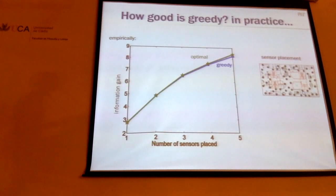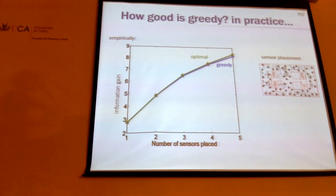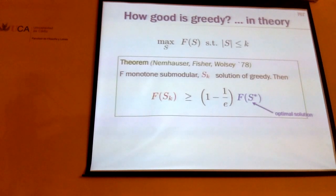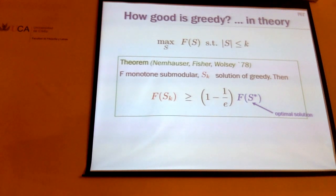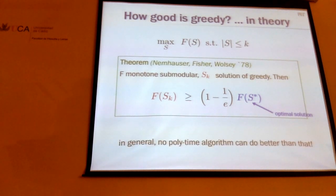Numerically, the greedy algorithm is often very close to optimal — here's a plot showing this for the sensor placement problem. The theory guarantees: if S* is the optimal solution, the greedy algorithm achieves at least (1 - 1/e) ≈ 63% of the optimal value. So in the worst case I'm at least 63% of optimal; often I'm much better. This is in fact the best guarantee you can expect from any polynomial-time algorithm.